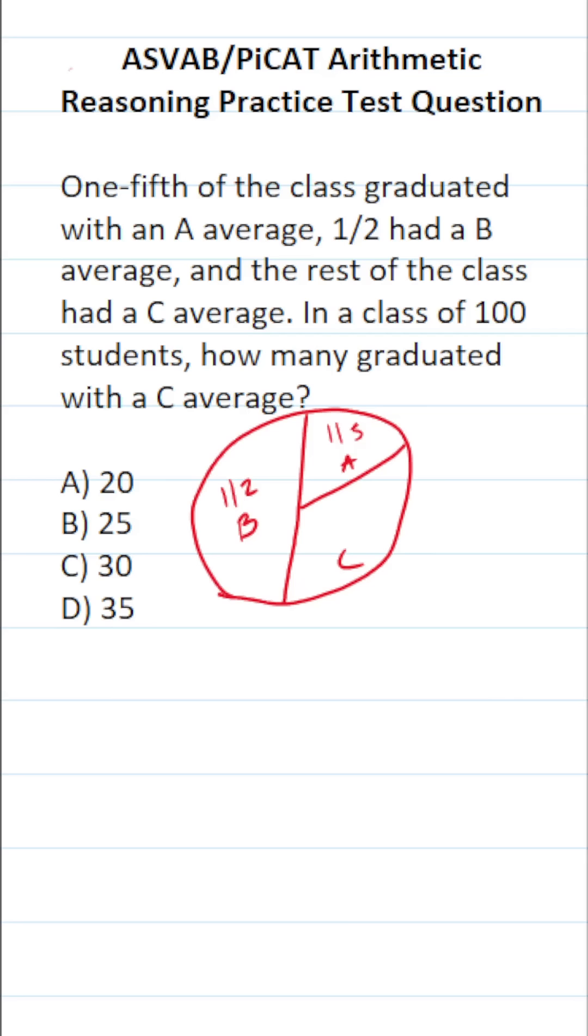So we have to determine what fraction of the class graduated with a C average, and we know that 100 students graduated in total. To calculate that fraction, we're going to set this up.